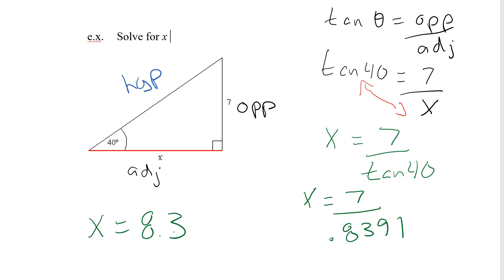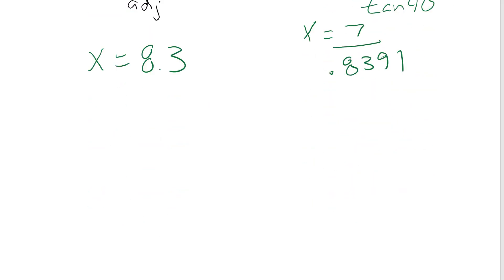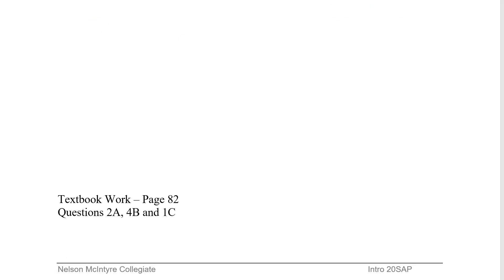So we just saw how to use tan to find both the opposite and the adjacent. If we go into our book, we can go to page 82. We can try two from the A's, four from the B's, and one from the C's.